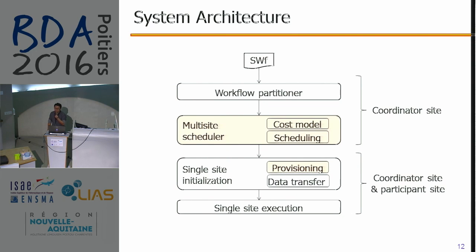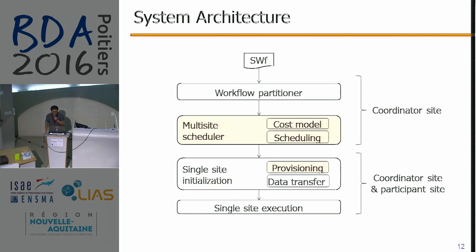We have four modules in the system architecture. The first module is a workflow partitioner, which partitions a scientific workflow into different fragments. Then the multi-site scheduler schedules different fragments to different cloud sites based on the cost model and scheduling approach. Afterward, a single-site initialization module prepares the environment to execute each fragment at a different cloud site. Finally, the single-site execution module executes different fragments at different cloud sites.